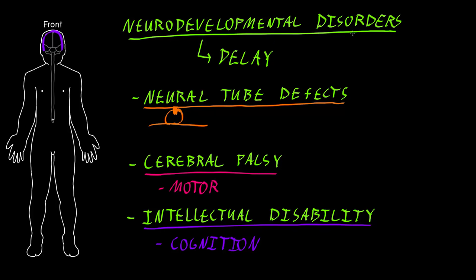These neurodevelopmental disorders — these collections of syndromes that fall under the category of neurodevelopmental disorders, and many other neurodevelopmental disorders — may occur in isolation. A person may just have neural tube defects, or just cerebral palsy, or just intellectual disability. Or, quite commonly, a patient may have an overlapping syndrome with features of several disorders happening at the same time.